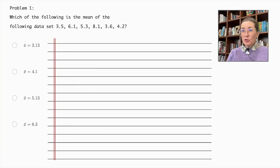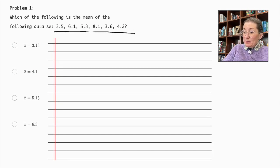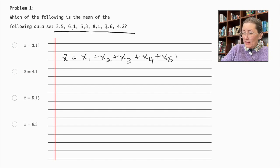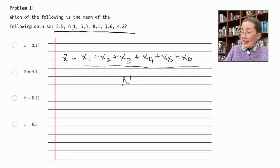Problem number one, which of the following is the mean for the following data set? Here is our data set. We are going to use the formula to find the mean or the average, and this is our formula. X equals, and we've got 1, 2, 3, 4, 5, 6 numbers in our data set. And x1 plus x2 plus x3 plus x4 plus x5 plus x6 over n. And n is the total number in the data set, which in this case, n is equal to 6.